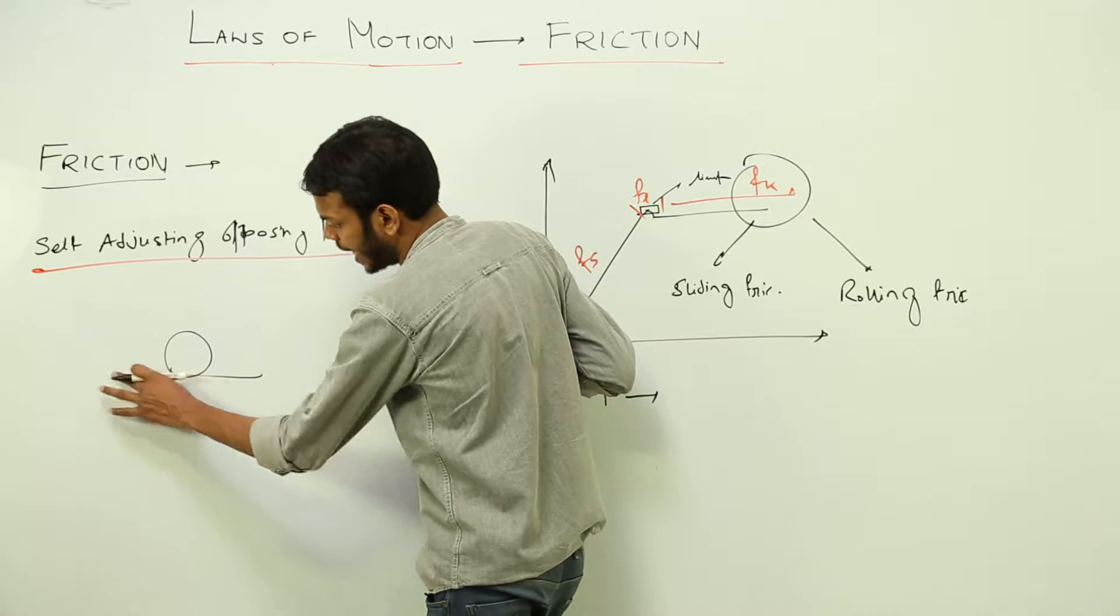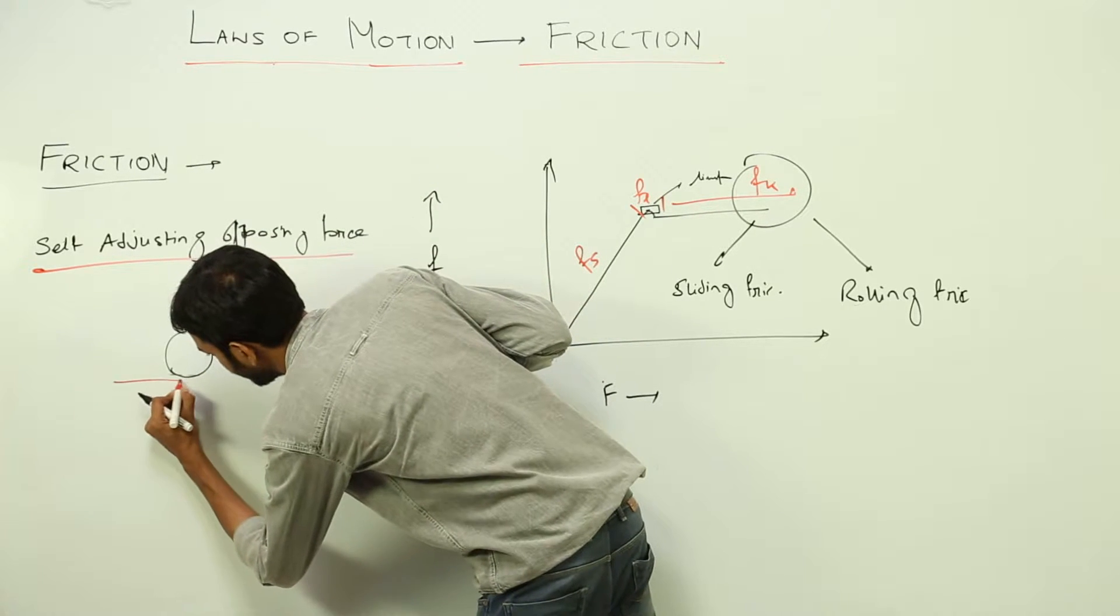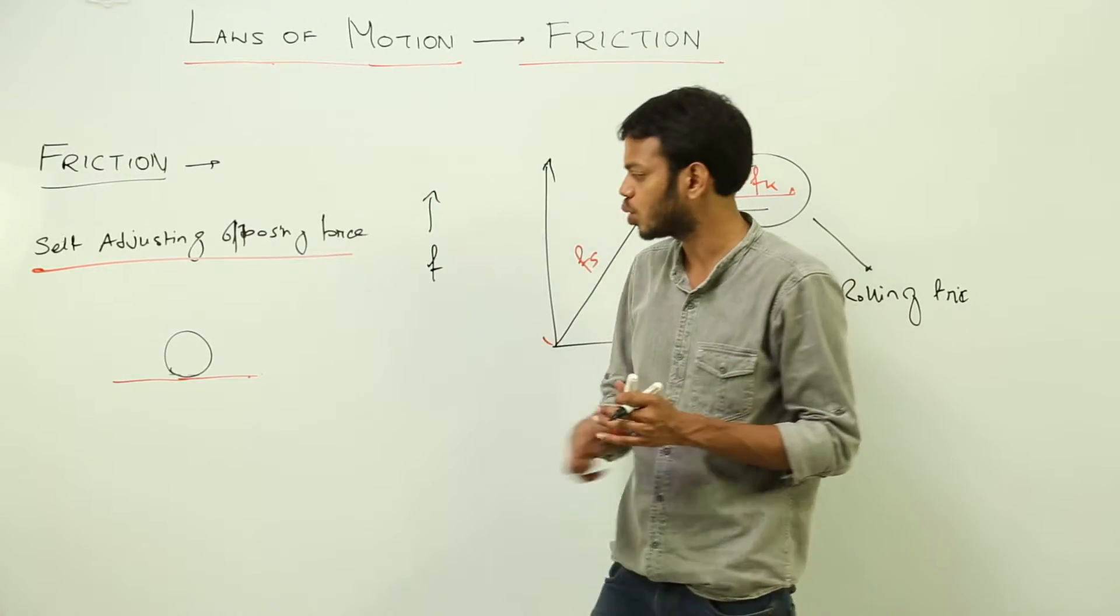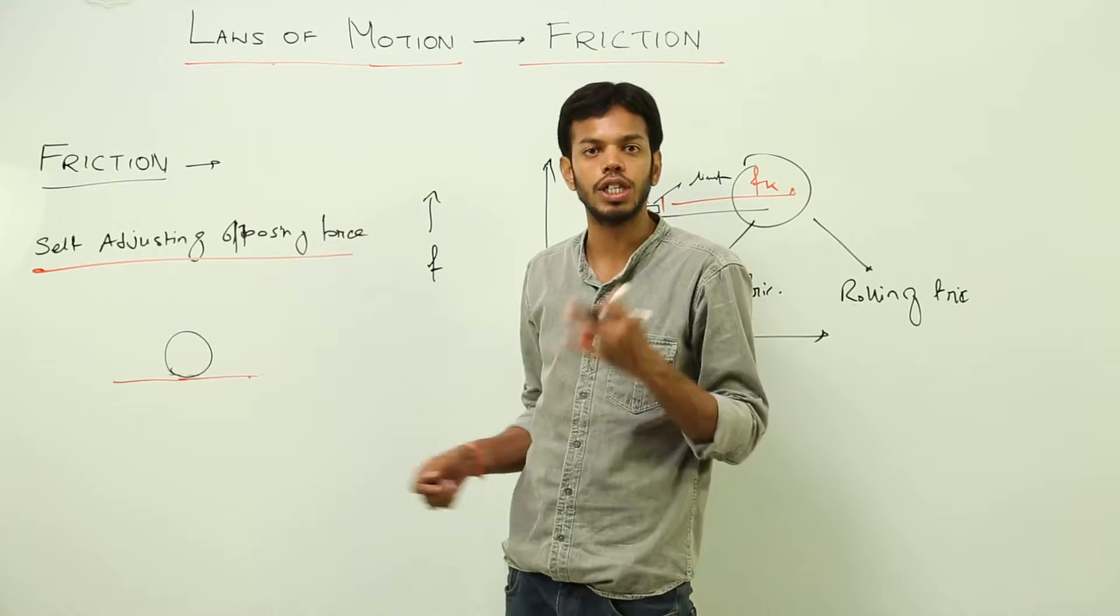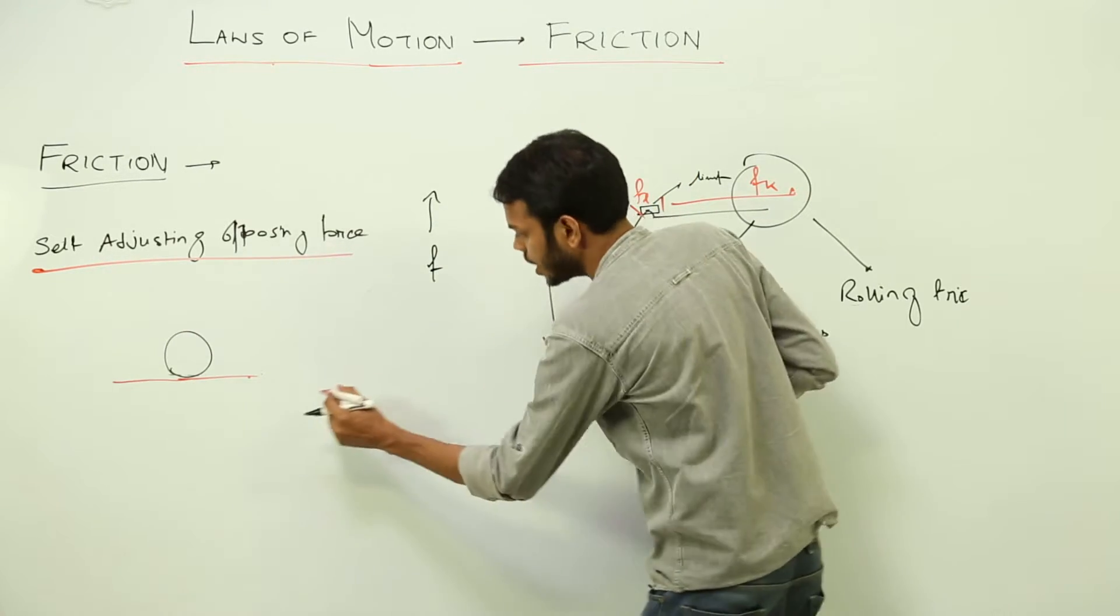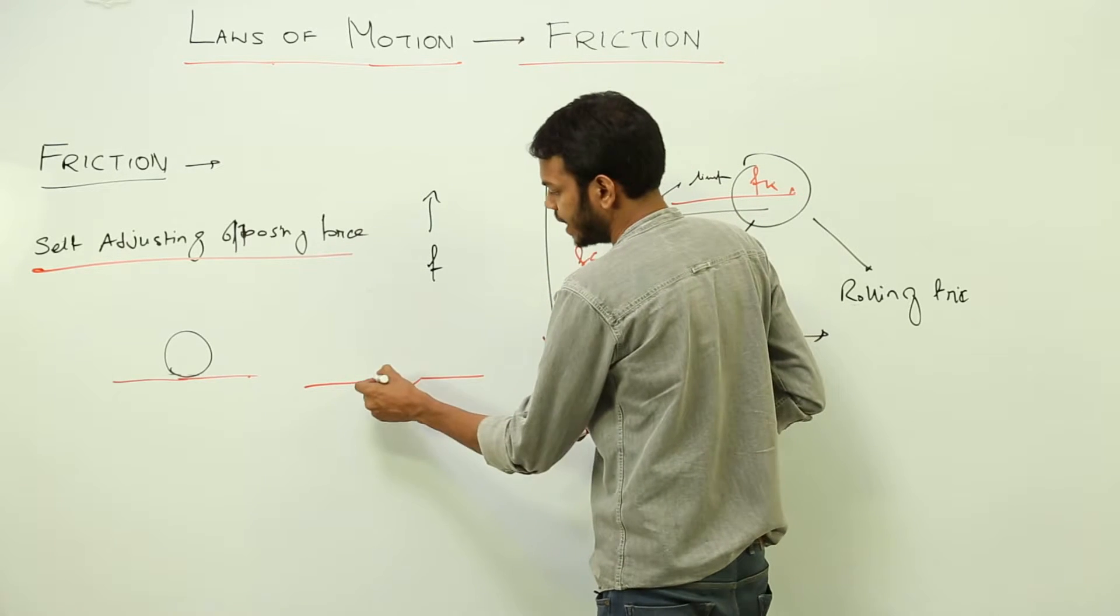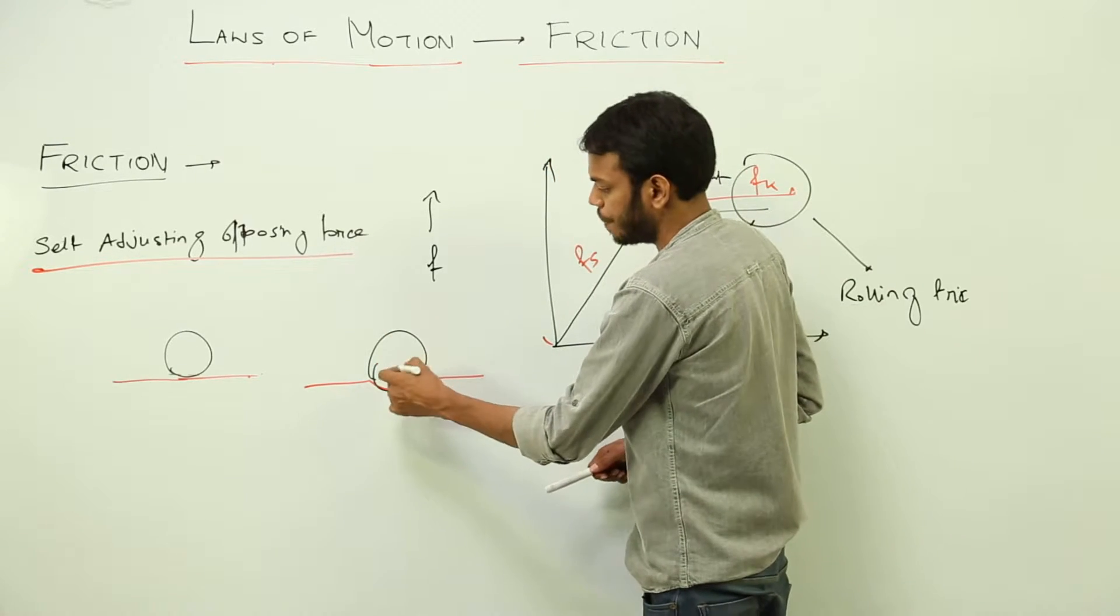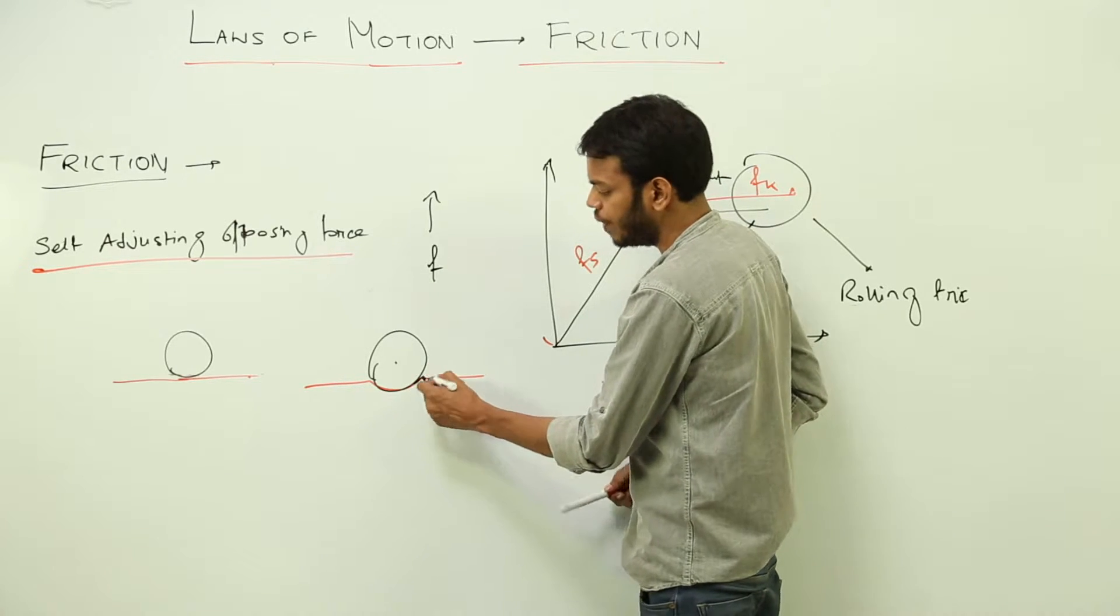Now, the point of contact, let me draw all this. The point of contact is actually very small. What happens? Due to the whole weight of this body, the pressure at the single point is very large, due to which a small depression is created by the circular body.